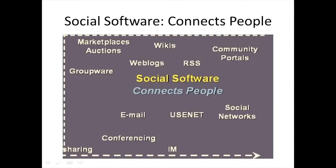Number five, user participation. Number six, basic trust — that is, relying on the participation of all while resisting the temptation to exclude trollers and free riders. And number seven, dispersion — the right and responsibility to build the web is dependent upon many, not the few.